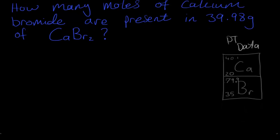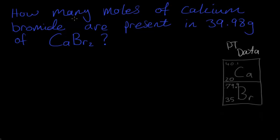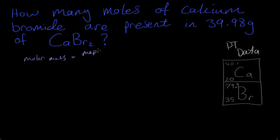Let's move on to the next question, which is very similar. How many moles of calcium bromide are present in 39.98 grams of CaBr₂? We've been given one quantity from the equation — molar mass equals mass divided by moles — and we need to work out the molar mass using the periodic table.